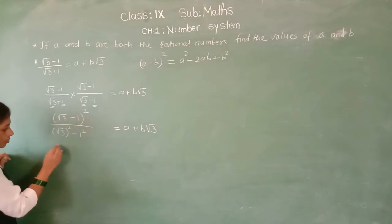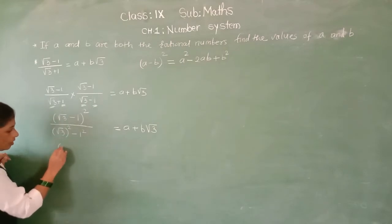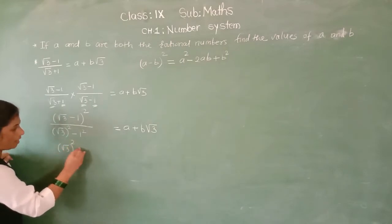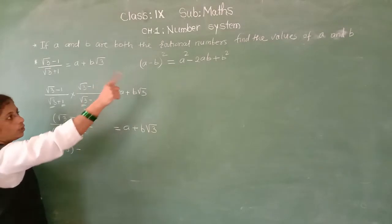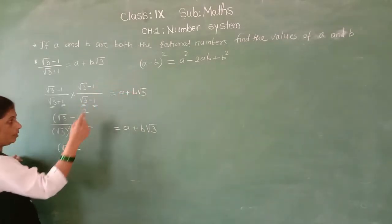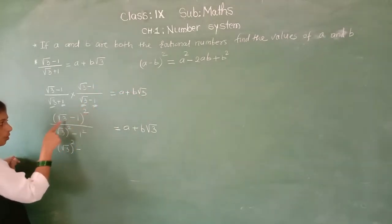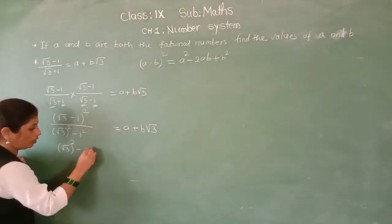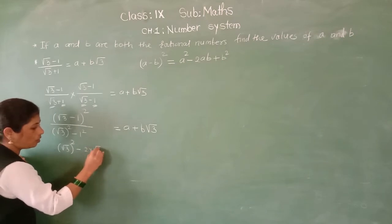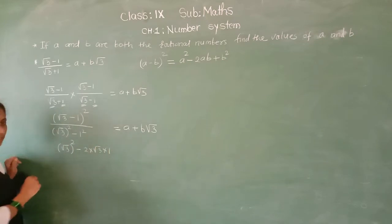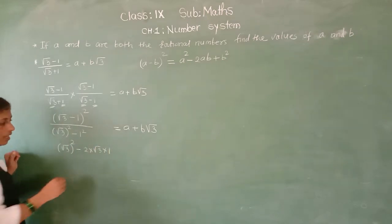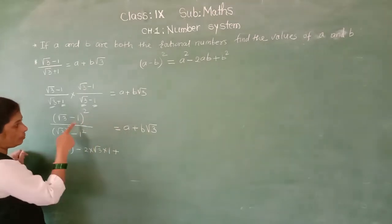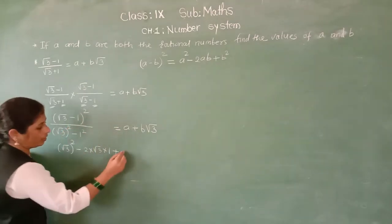So A squared means root 3 squared, minus 2AB — this is 2 into A which is root 3, and B is 1 — so 2 into root 3 into 1. Plus B squared means 1 squared.